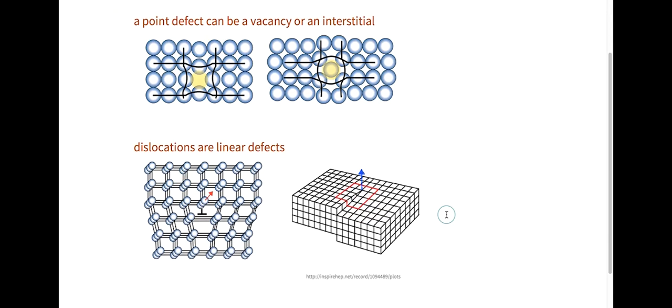Another type of defect are dislocations, which are linear defects. Here is an example of an edge dislocation. The red arrow here shows the line direction of the defect, which is at the edge of this extra plane that's in the lattice.